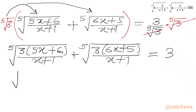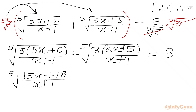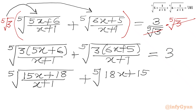So we can write our equation as: fifth root of (15x + 18 over x + 1) plus fifth root of (18x + 15 over x + 1) equal to 3.